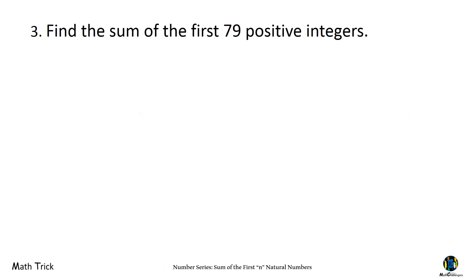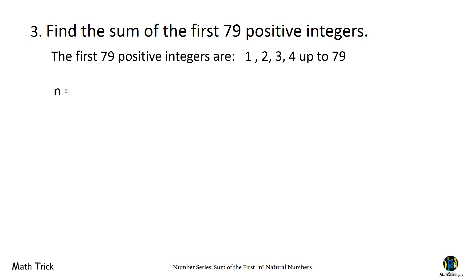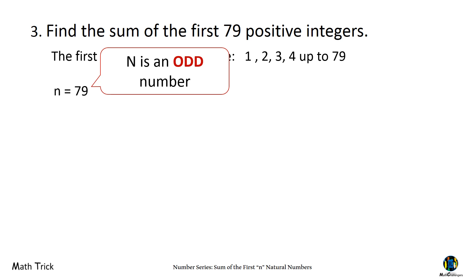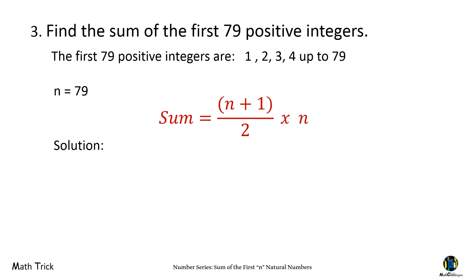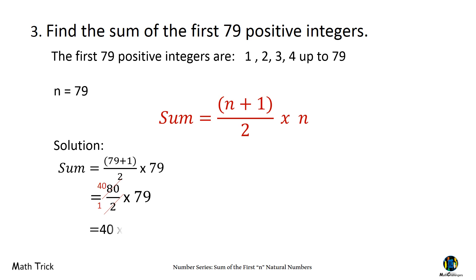Find the sum of the first 79 positive integers: 1, 2, 3, 4, up to 79. If N is an odd number, use the formula: sum equals the quantity N plus 1 over 2, times N. Substituting: (79 plus 1) over 2 times 79, which gives 80 over 2 times 79. 80 divided by 2 is 40. 40 times 79 gives the answer 3,160.